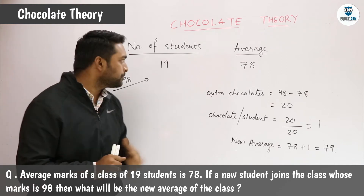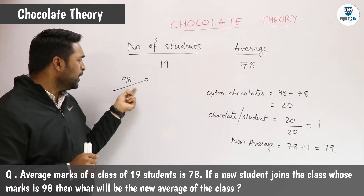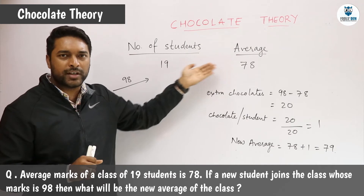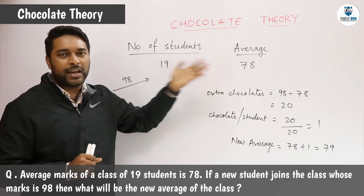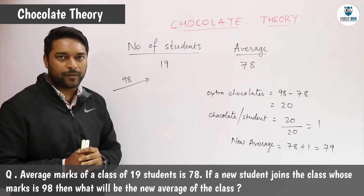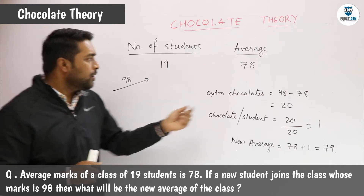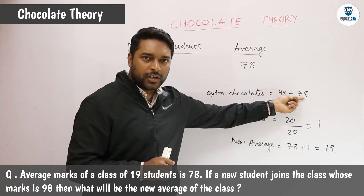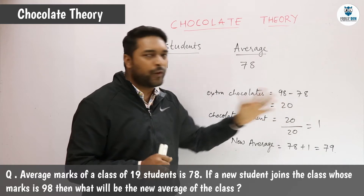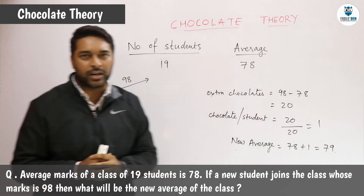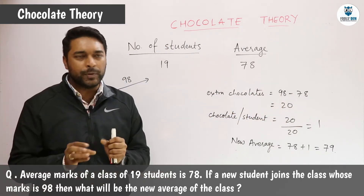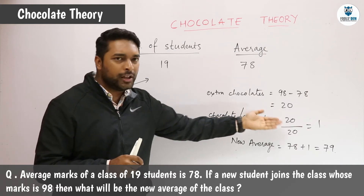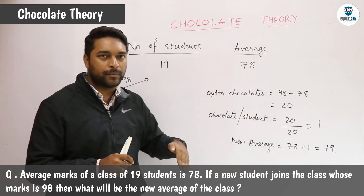When the new student comes and he sees that the rest of the students have 78 chocolates, he will keep 78 chocolates with himself. So out of 98, he keeps 78 chocolates. Now he will have 20 chocolates extra, and he will distribute these extra chocolates among all the students including himself.